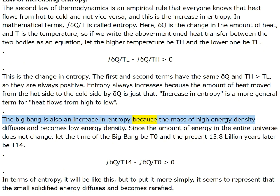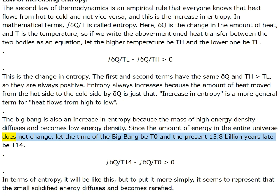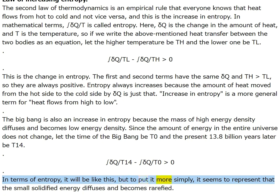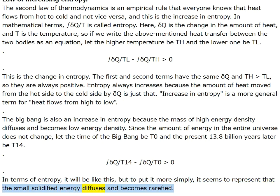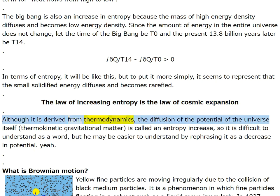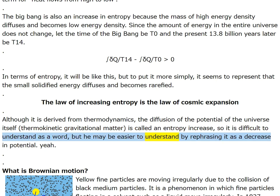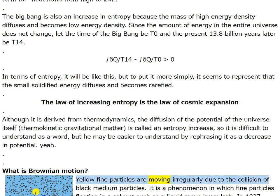The big bang is also an increase in entropy because mass of high energy density diffuses and becomes low energy density. Since the amount of energy in the entire universe does not change — at time of the big bang t=0 and present t=14 billion years: ∫δQ/t14 − ∫δQ/t0 ≥ 0. The law of increasing entropy is the law of cosmic expansion. The diffusion of the potential of the universe — thermokinetic gravitational matter — is called entropy increase, or more simply, a decrease in potential.